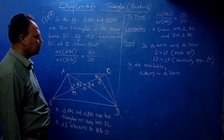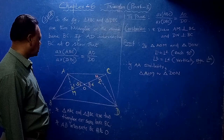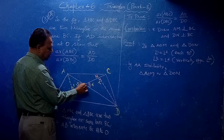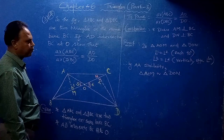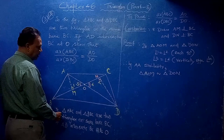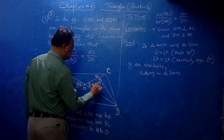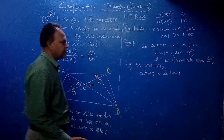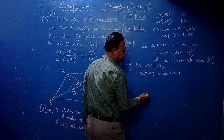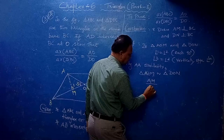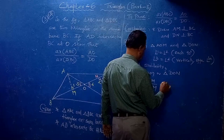These two triangles being similar means corresponding sides are proportional. So: AO by DO equals AM by DM. Take this as equation (1).